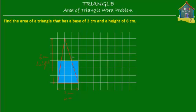So what do we see? We see that we have filled how many squares? Let's count: one, two, three, four, five, six, seven, eight, and nine. We have filled nine squares, and that means the area of this triangle is equal to nine centimeters square. So a triangle with a base of three centimeters and a height of six centimeters has an area of nine centimeters square.